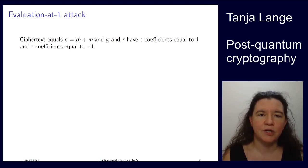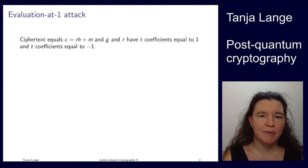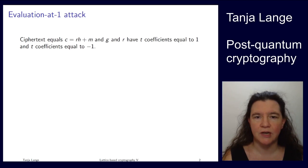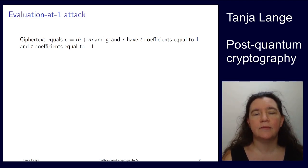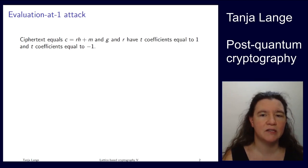The first of those that we are going to look at is the evaluation at 1 attack. So remember that we are dealing with polynomials here. H was the public key, M was the message. The public key is some polynomial which has coefficients modulo q, which is a large number. M has coefficients 0 and plus or minus 1. All polynomials have degree up to n minus 1. And R is another polynomial which has a fixed number of plus 1 and minus 1 coefficients, and all the other coefficients are 0.